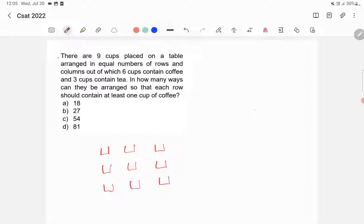In these nine cups you need to fill six cups with coffee. So total ways for doing that is 9C6 which is equal to 9 factorial divided by 6 factorial into 3 factorial which is equal to 9 into 8 into 7 divided by 1 into 2 into 3.